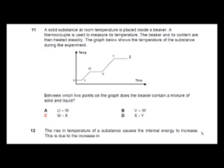Question 11: A solid substance at room temperature is placed inside a beaker. A thermocouple is used to measure its temperature. The beaker and its content are then heated steadily. The graph below shows the temperature of the substance during the experiment. Let's underline some of the keywords: solid substance at room temperature, so we know that it starts off at room temperature. Then a thermocouple - thermocouple is an instrument used to measure temperature, just like your mercury thermometer or temperature sensor. The beaker and its content are then heated steadily, so let's underline these keywords.